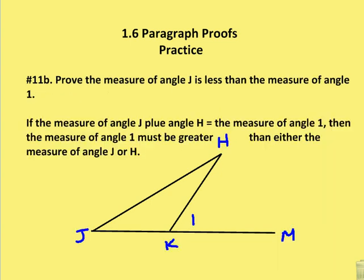In the last question, using the same diagram, we're asked to prove that the measure of angle J is going to be less than the measure of angle 1. So again, we start as a paragraph proof and just state what we're trying to prove and then make a comment about what we can see or what's given in the diagram. If the measure of angle J plus the measure of angle H is equal to the measure of angle 1, which is what we proved earlier, then the measure of angle 1 must be greater than either measure of angle J or H.